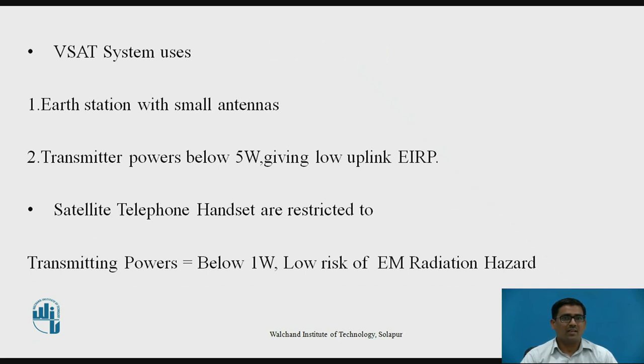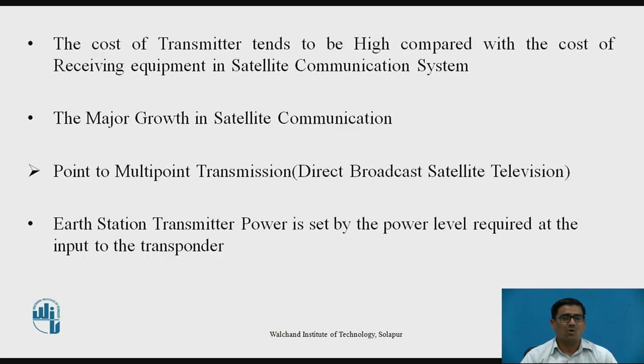V-SAT systems use stations with small antennas and transmitter power below 5W that gives low uplink EIRP. Satellite telephone handsets are restricted to transmitting powers below 1W for low risk of EM radiation hazards. The cost of transmitters tends to be high compared with receiving equipment. Therefore, the major growth in satellite communication is point-to-multipoint transmission used in direct broadcast satellite television. The earth station transmitter power is set by the power level required at the input to the transponder.